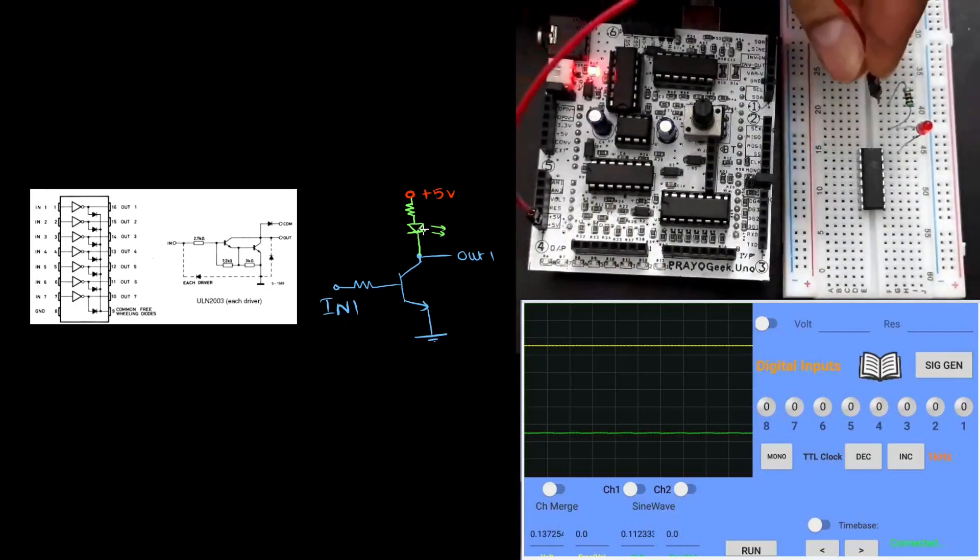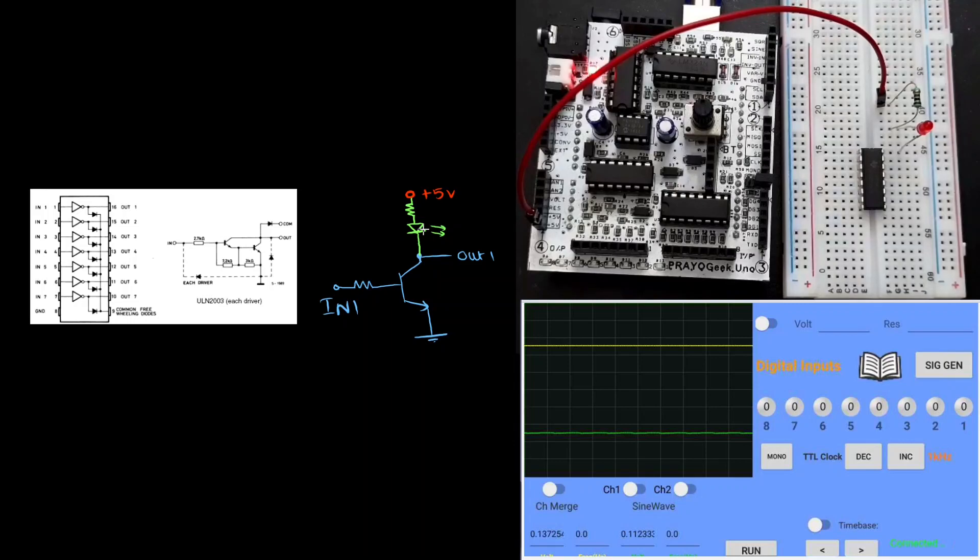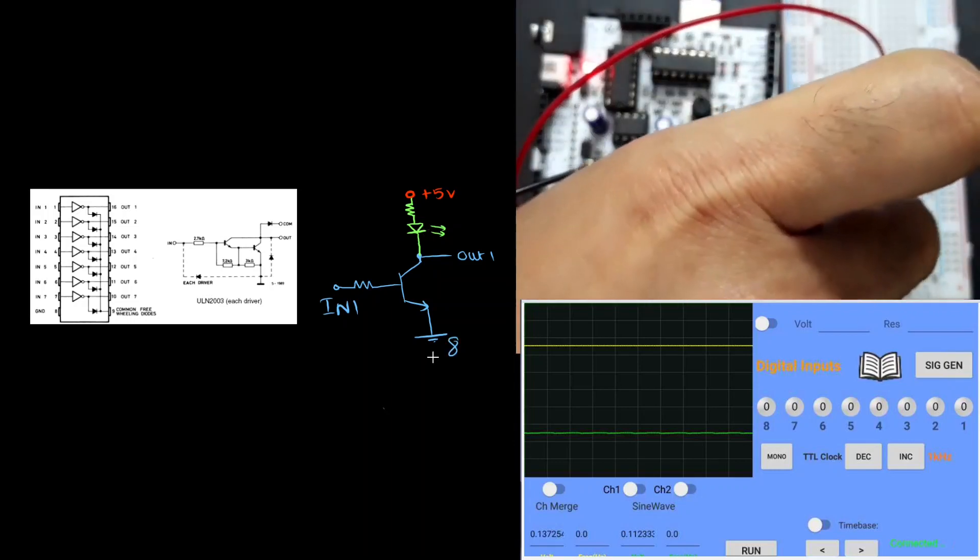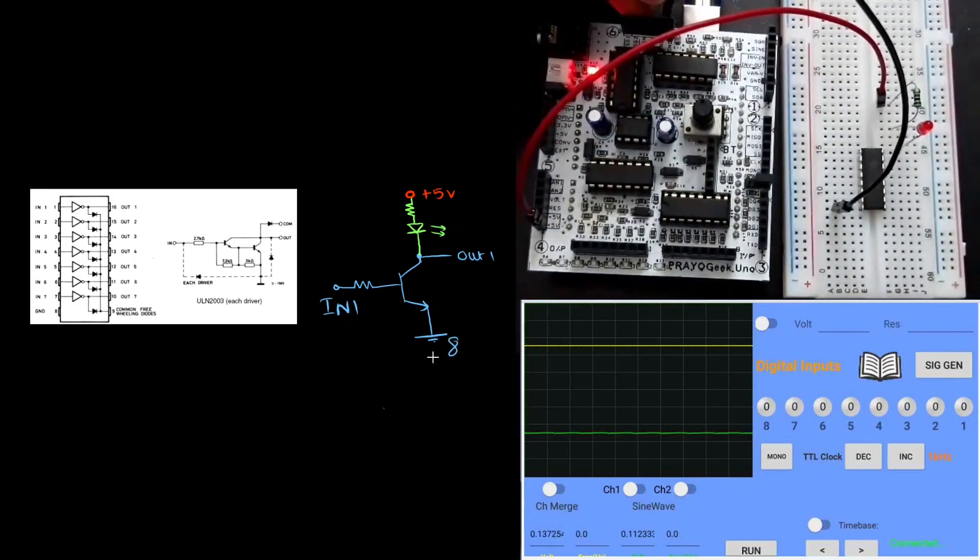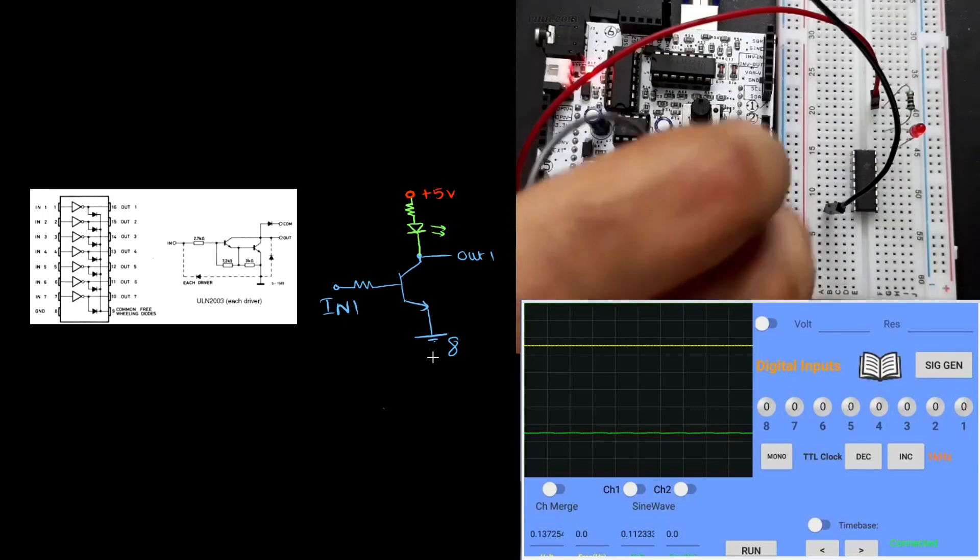I connected the resistor and the LED. The next step is I need to provide 5 volts to the resistor. Now to close the circuit, I need to connect pin number 8 to the ground pin of PryoGeek Uno board. Now let's give input from PryoGeek Uno input headers to pin number 1.